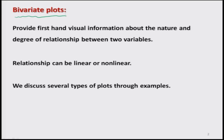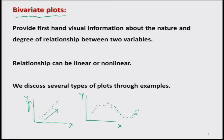For example, consider a plot with variable x and variable y. A graph can indicate that the relationship between x and y is increasing — as x increases, y also increases. Another plot might show a non-linear relationship that first increases, then decreases, then increases again. Yet another plot might show no relationship, with points randomly distributed. This type of information can be obtained from bivariate plots.